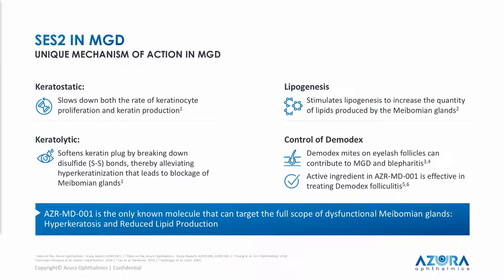Our lead compound is selenium disulfide. It has a unique mechanism of action. Firstly, it's keratostatic — it slows down the future deposition of keratinocytes. It's keratolytic, so it breaks disulfide bonds. It also has the unique property of increasing lipid production. Early on in the 1950s when this product was first developed for seborrheic dermatitis, a clinical side effect was increased lipid production from sebaceous glands. In a disease like meibomian gland dysfunction, that's possibly a very good benefit. It is also well published anecdotally that selenium disulfide has an impact on controlling demodex mites.